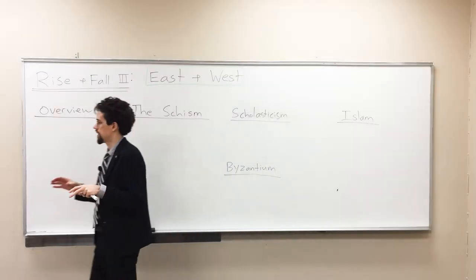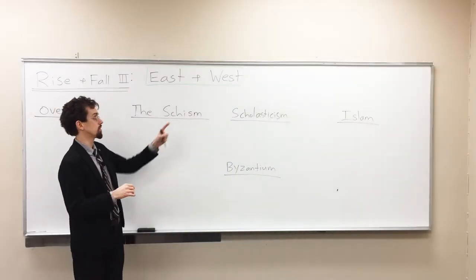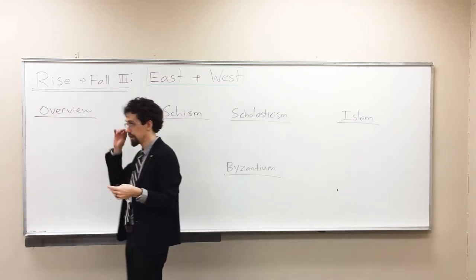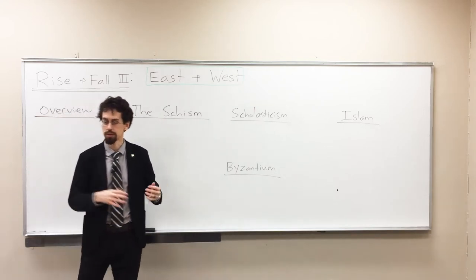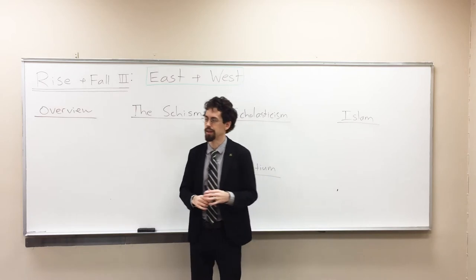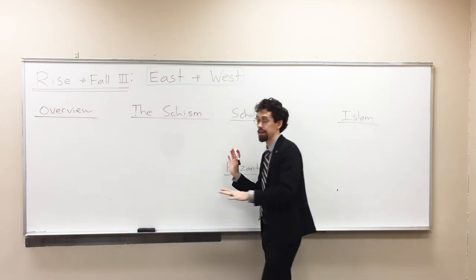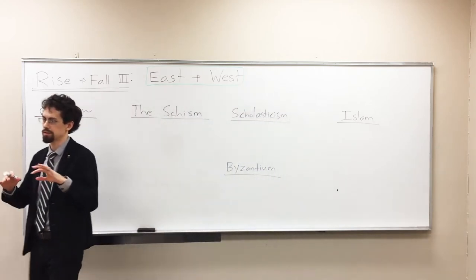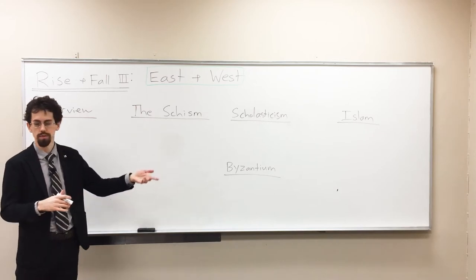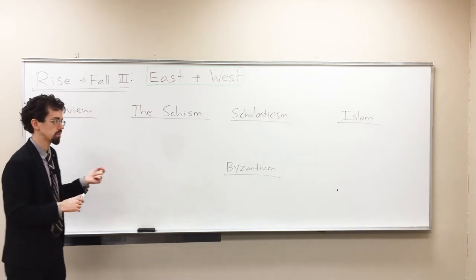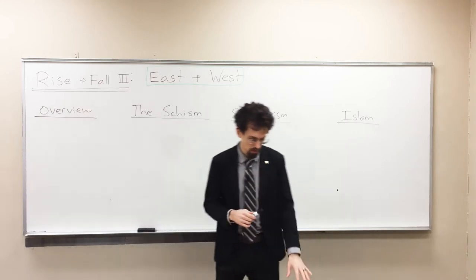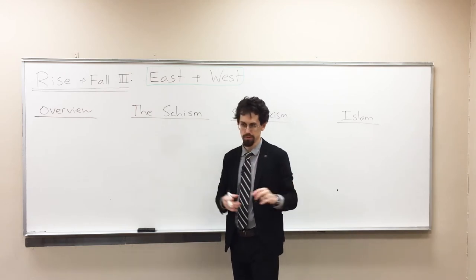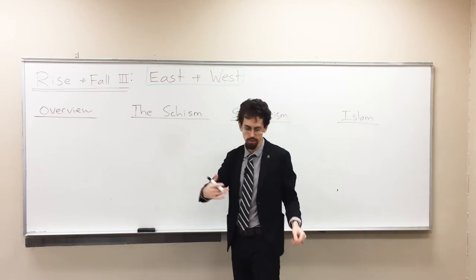This is part three of the rise and fall of Christian civilization. We're going to talk about some of the textures and nuances of the medieval era, namely the differences between Eastern and Western Christianity, and some of the factors that were going on then. This is a very complicated, long thousand years, so what we're saying here is by necessity in terms of the broad brushstrokes — lots of generalizations, but hopefully helpful ones to get you some footholds into understanding this era better.